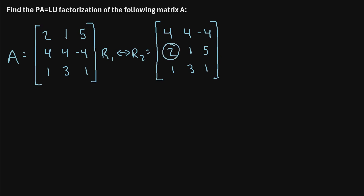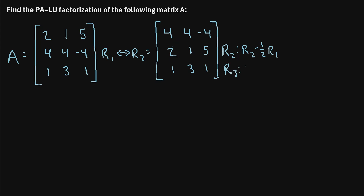Now we can proceed to make the values below the pivot position equal to zero. For row two, we do row two minus one half of row one: two minus one half of four gives us zero. For row three, we subtract one fourth of row one: one minus one fourth of four is one minus one, which also gives us zero.